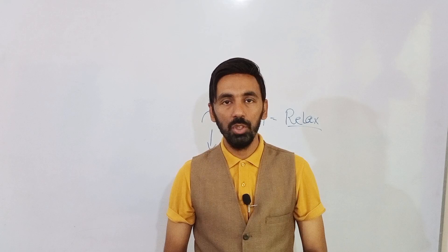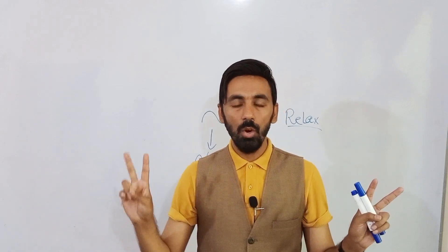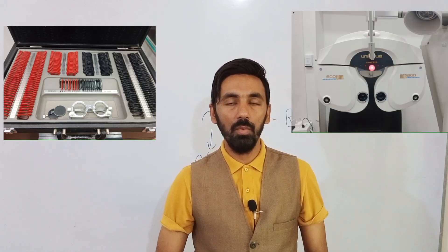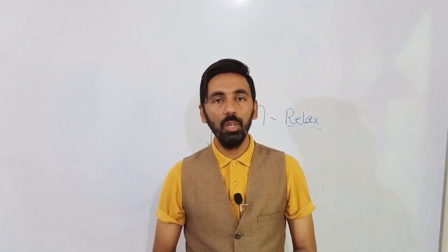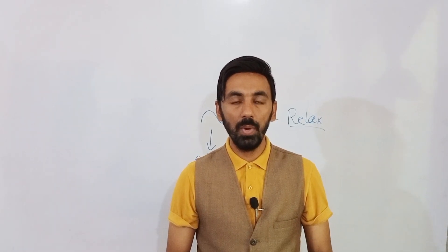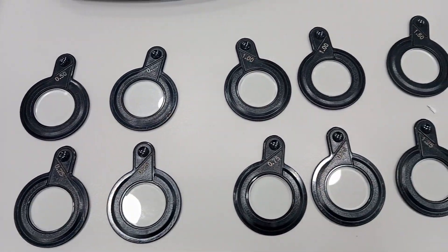To measure NRA, there are two methods: with the trial box and with the phoropter. Prerequisites for the trial box method include a trial frame, a trial box with plus spherical lenses, and a near chart as the target. The patient is positioned with the reading chart at 40 centimeters, and we have a range of plus spherical lenses to relax accommodation.